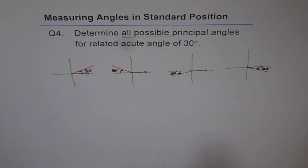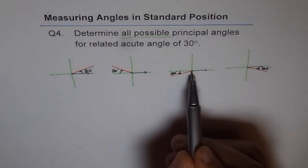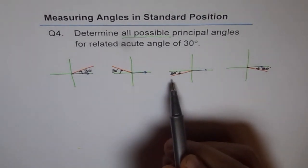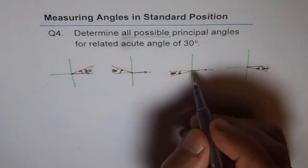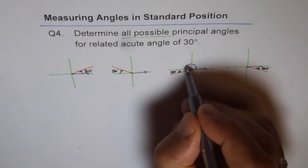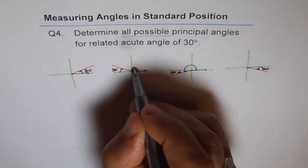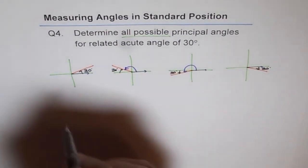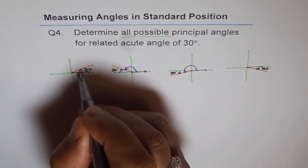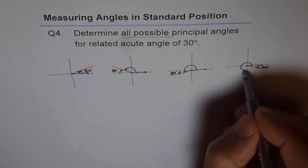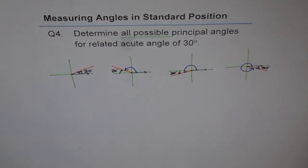In standard position, the initial arm is along the positive x-axis and the terminal arm can be in any quadrant. So here the principal angle is 180 plus 30 for one case, and 180 minus 30 for another. In the first quadrant it is the same as the related acute angle, and in the fourth quadrant it is 360 minus 30 degrees.